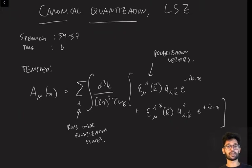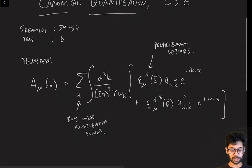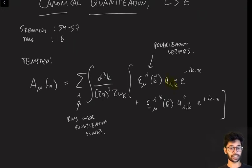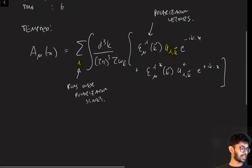And as usual, we integrate over all the momentum. Now basically you see that you're going to have one creation and annihilation operator for each different photon polarization lambda. Now this seems quite reasonable, but you see that the issue is that actually not all the states here are physical.